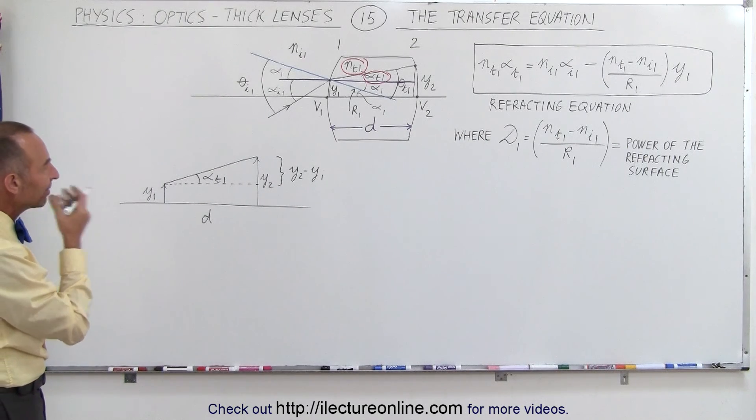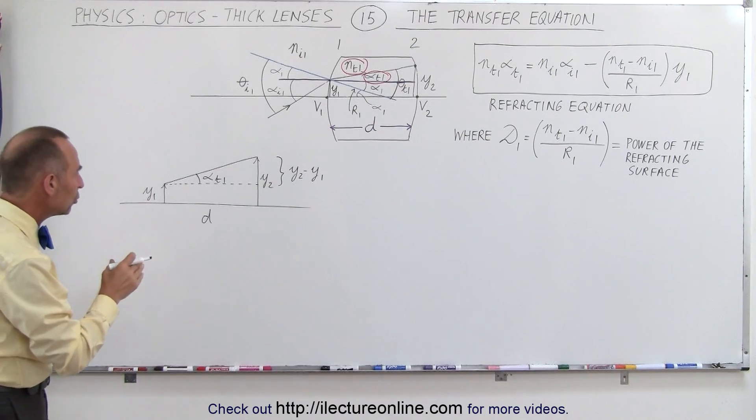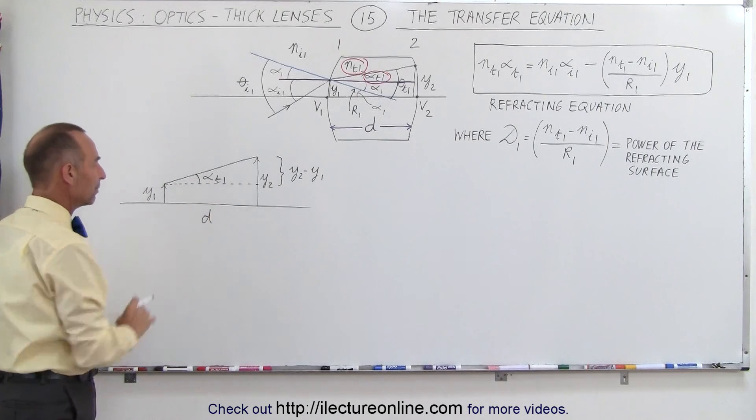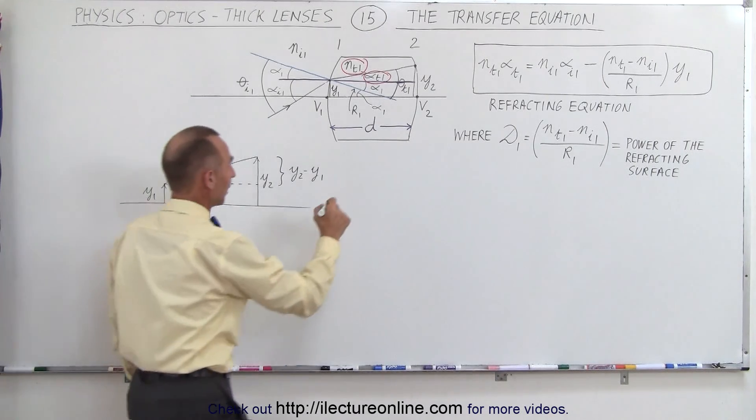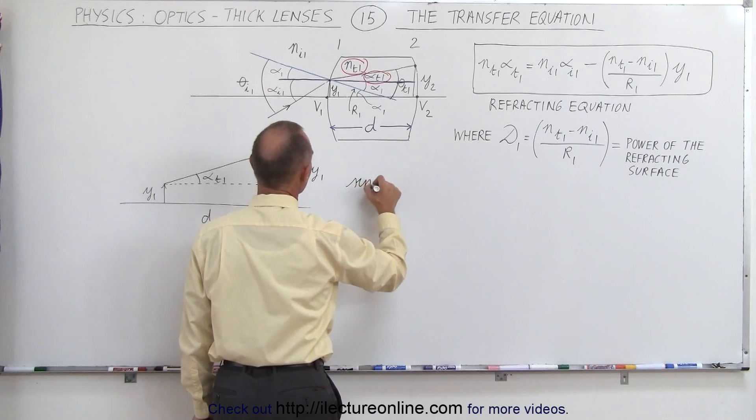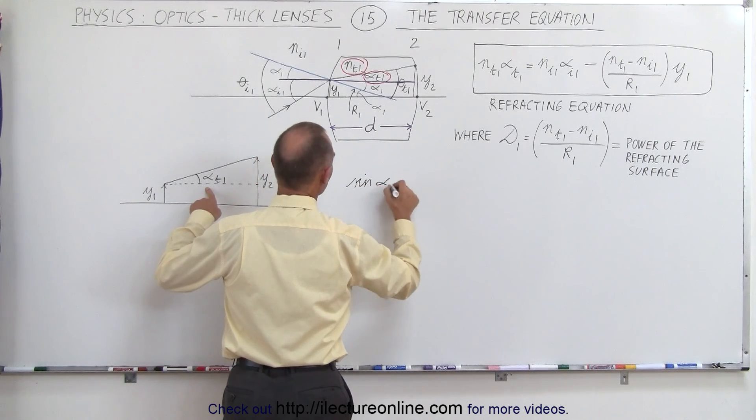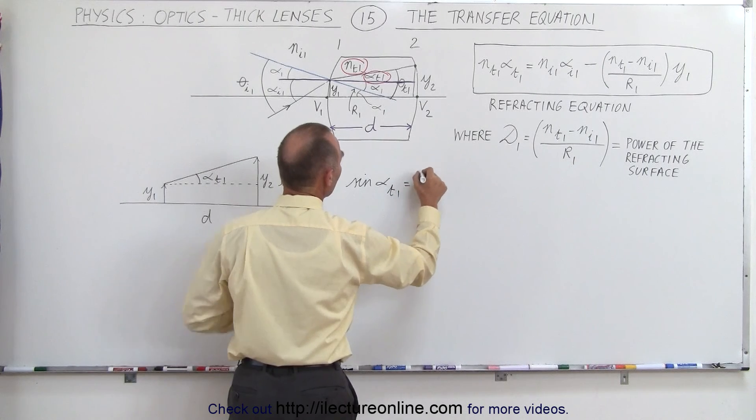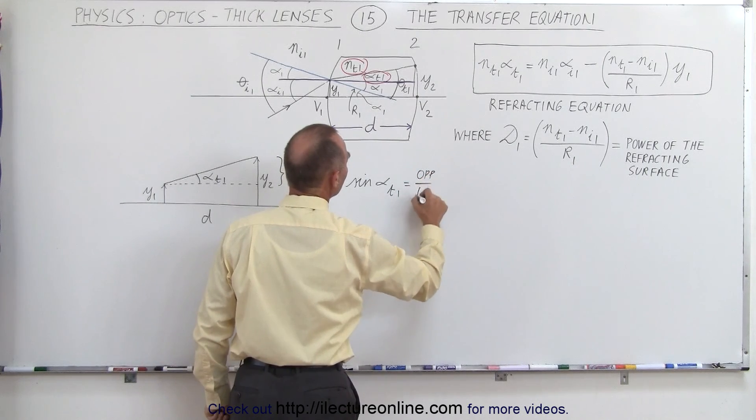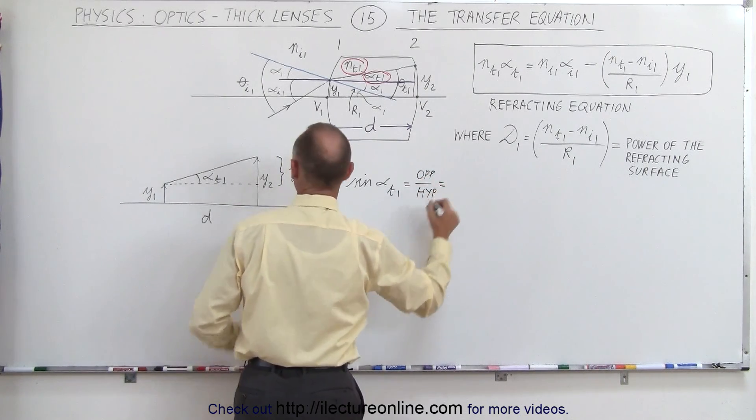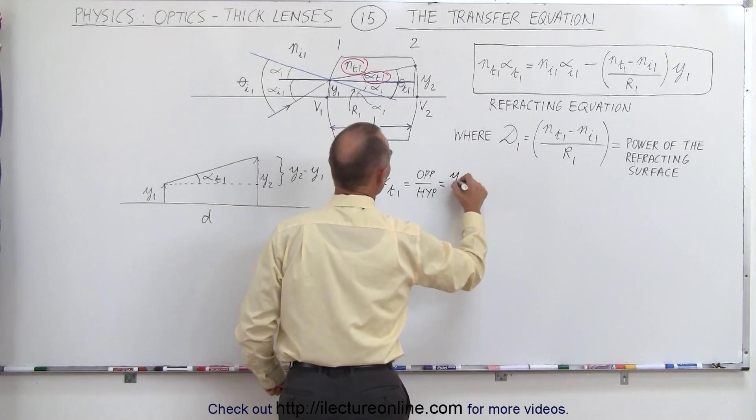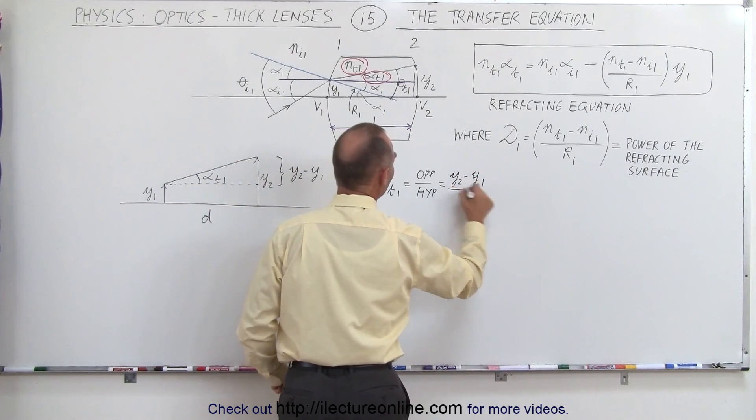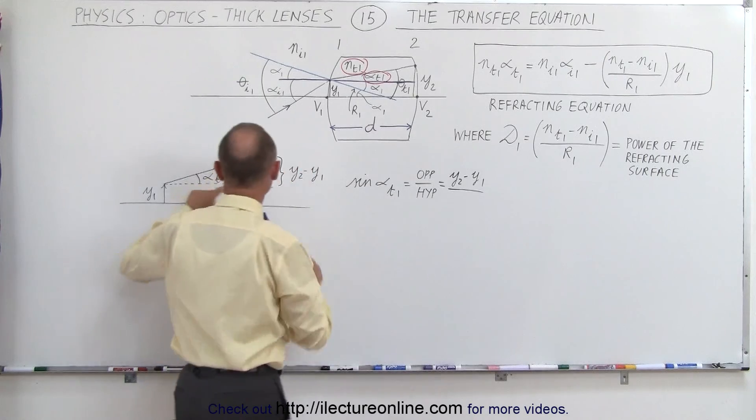And we can set that equal to the sine of the angle right here. Now notice what I'm going to do. I'm going to write the sine of alpha t1 by definition is going to be equal to the opposite side over the hypotenuse. And of course the opposite side will be y2 minus y1, that is the height gain or the difference in height between those two points.